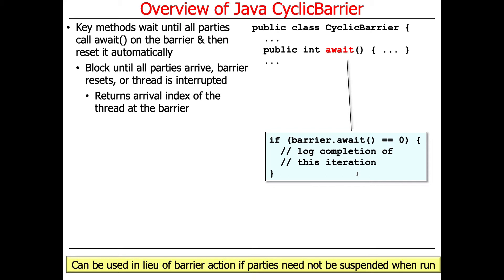If barrier await returns zero, that means it was the last thread to arrive, and therefore you can use that as some kind of flag or indicator in lieu of barrier actions if the parties don't have to be suspended. In practice, it's a good idea to use the barrier action because you can be assured that things are properly synchronized, and it reduces the chance of race conditions.